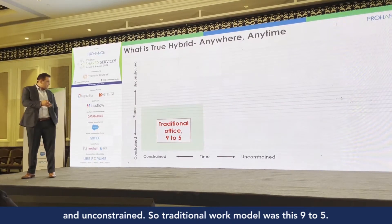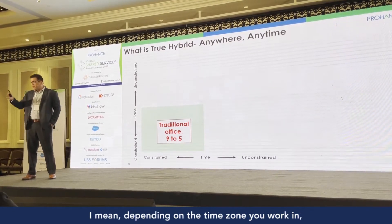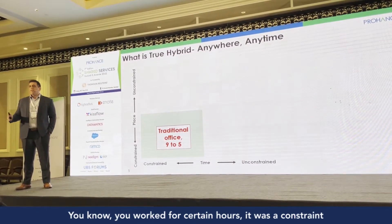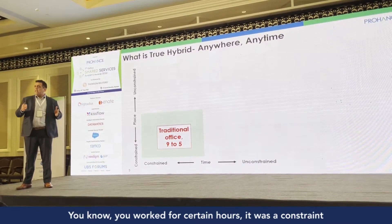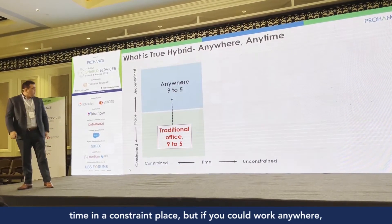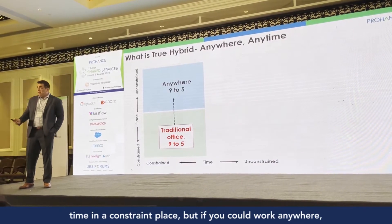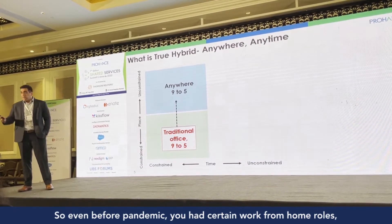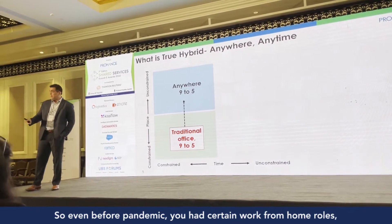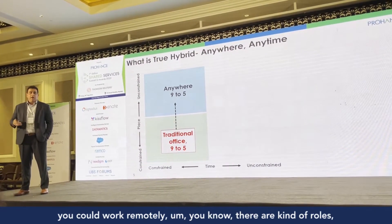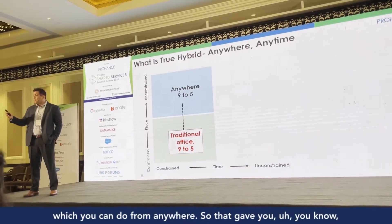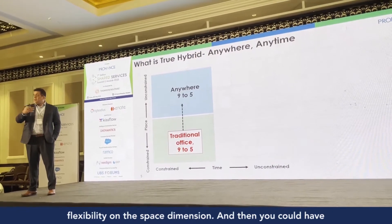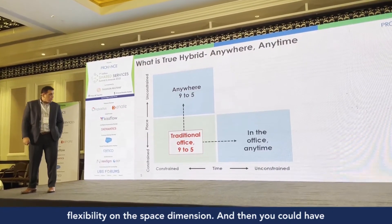A traditional work model was nine to five — constrained time in a constrained place, the traditional office. But if you could work anywhere, your space became flexible while you still worked the same hours. Even before the pandemic, certain work-from-home roles allowed you to work remotely, giving flexibility on the space dimension.